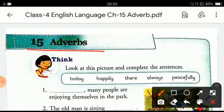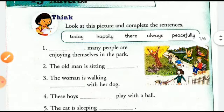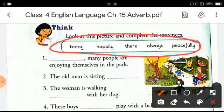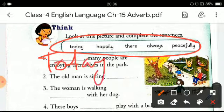Now let's begin the chapter with an exercise. Here you have to look at the picture and complete the sentences with the help of the words given in the box. The first one is: 'dash many people are enjoying themselves in the park,' and the word used is 'today.'